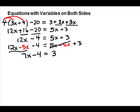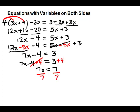Now we have a standard two-step equation. On the right-hand side you're going to get rid of your 4 — it's subtracted, so you will add. Do the same on the right-hand side. Clean up. Then go back to the side with your variable and divide out your coefficient. We divide both sides by 7, which gives us x equals 1.